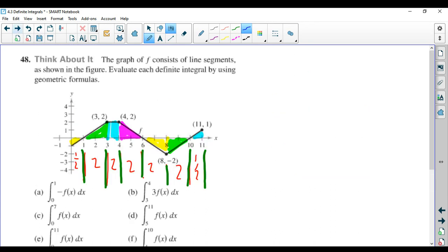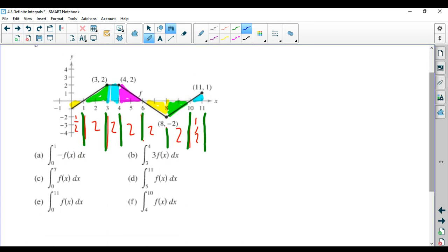Part c. The integral from 0 to 7 of f(x). This is straightforward, except, see my area here? I have to stop at 7. So I'm only using part of that. This little area now is one-half base, which is 1, times height, which is 1. So this little area is just one-half.